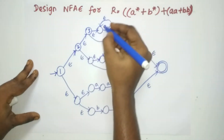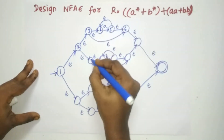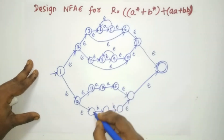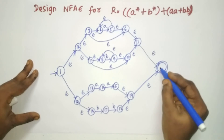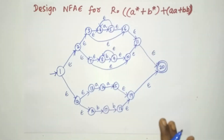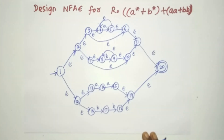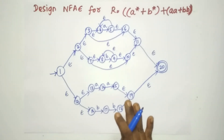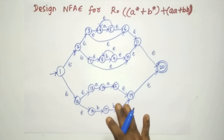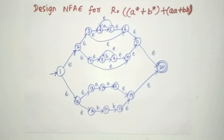Now start numbering the states. Complete the numbering for the top portion of the automaton first, then continue — for example, after state 11 at the boundary, start numbering from 12 and 13 — then move to the bottom portion. This is the complete NFA Epsilon machine for R = A*+B* + AA+BB. I hope these two videos give you the ability to draw the NFA Epsilon machine for any given regular expression using Thomson's construction. If you want a design for a specific regular expression, comment on the channel. Don't forget to like, share, and subscribe. Thank you.